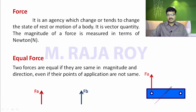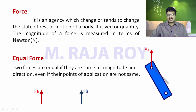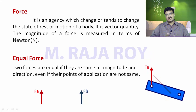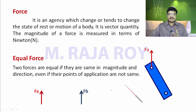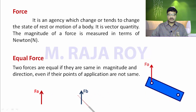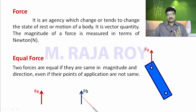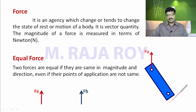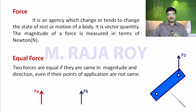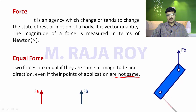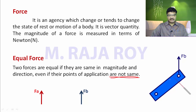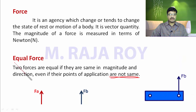Consider this example: there is a block, and I am applying force Fa at one end. The block tilts — the left side goes up and the right side goes down. Now I apply the same equal force Fe at the other end. The block tilts in the opposite direction. Even though both forces have the same magnitude and direction, the effect is different because the point of application changed. But these two are still said to be equal forces because they have the same magnitude and same direction.